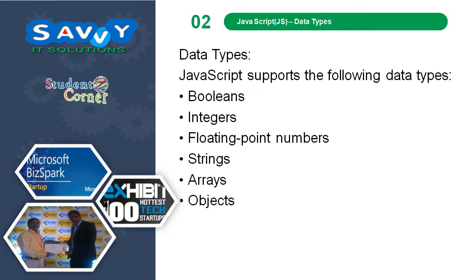Now the data types. JavaScript supports the following data types: boolean, integer, floating point, strings, arrays, and objects. Sometimes arrays also work like an object. Whenever we are creating a variable, there is no need to define the data type. Automatically, based on the value, the variable is converted into a particular data type — no need to mention it explicitly.